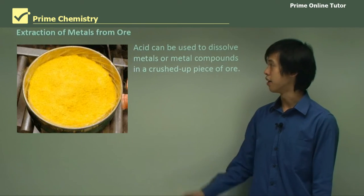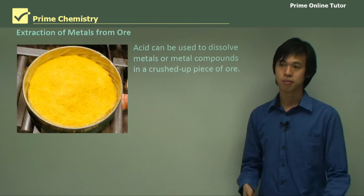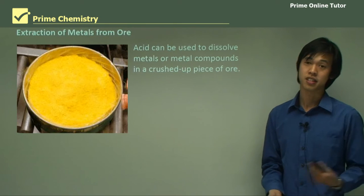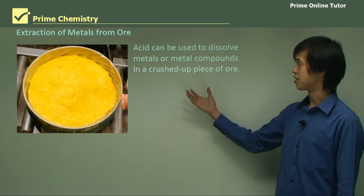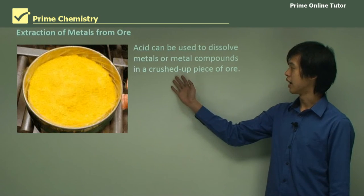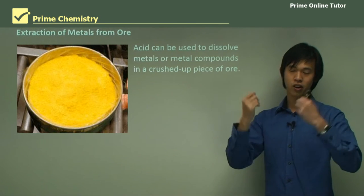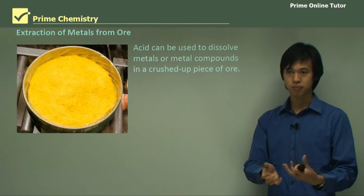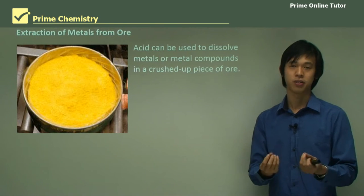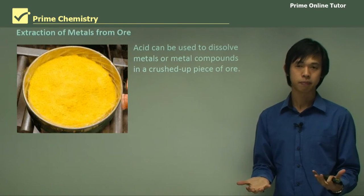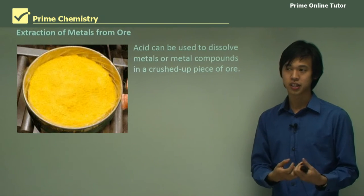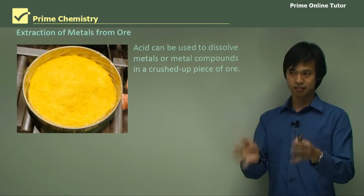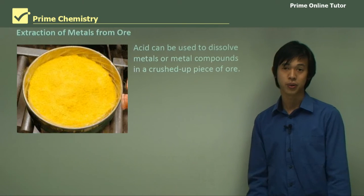Another major use is extraction of metals from ore. Many metals are combined with other compounds, so we use acids to dissolve the metals or metal compounds in crushed pieces of ore. For example, with copper ore — we put sulfuric acid onto the crushed ore, it dissolves the metal we want, producing copper sulfate. We then filter out the slag and electrolyze the solution to get the pure metal.